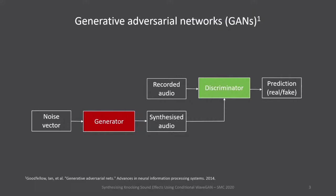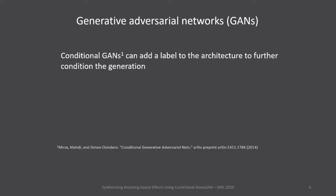GANs are composed of two neural networks: a discriminator and a generator. The discriminator is a classifier trained on real data that predicts whether a sample is real. The generator samples from a random distribution, typically Gaussian, and produces a sample. The generator's goal is to fool the discriminator, progressively achieving this by training against it. Once trained, one samples from the random distribution, passes it through the generator network, and generates a sample closely resembling the training data. Conditional GANs allow further control by adding a class label — for example, the surface type — to produce a sample on a specific surface.